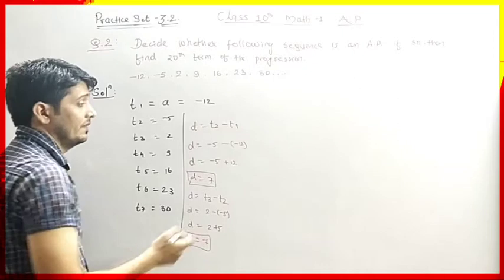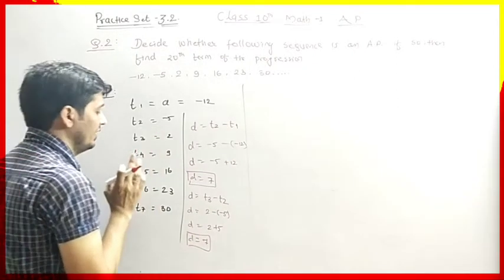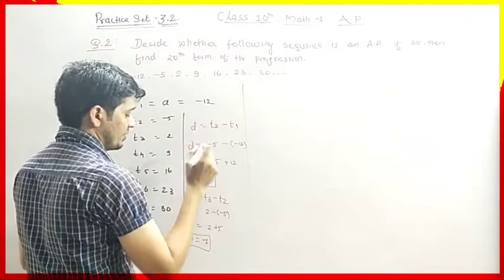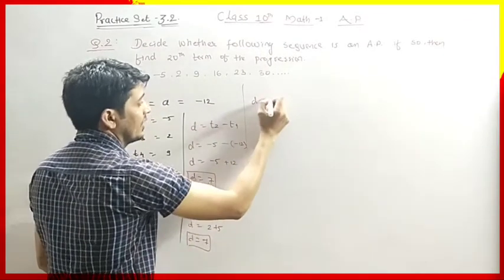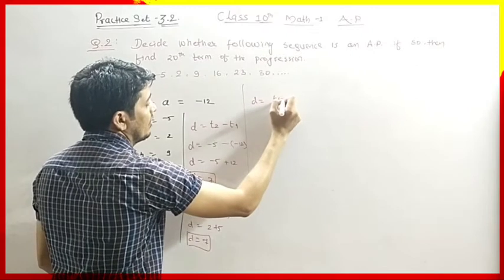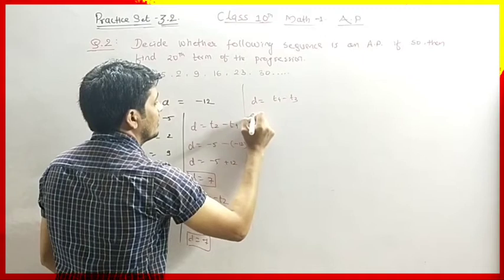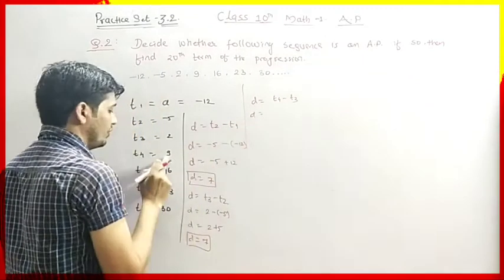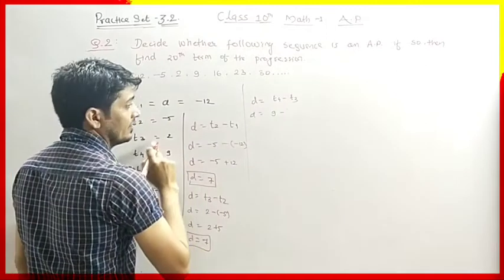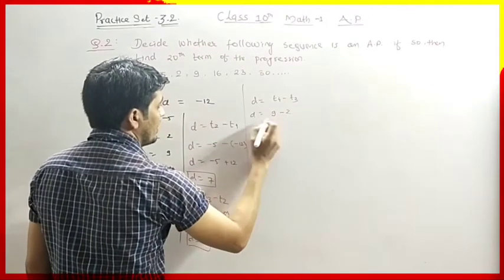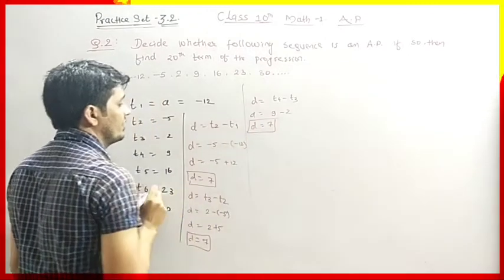Here again D is 7, meaning these consecutive terms are consistent in arithmetic progression. Next, D equals T4 minus T3. D equals 9 minus 2, so D equals 7. Then D equals T5 minus T4. T5 is 16, T4 is 9, so D equals 16 minus 9, which is 7. Common difference is the same.